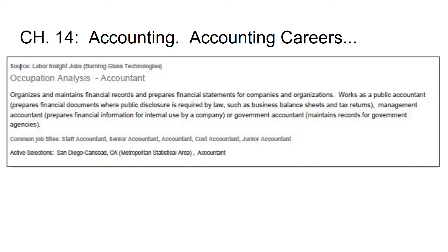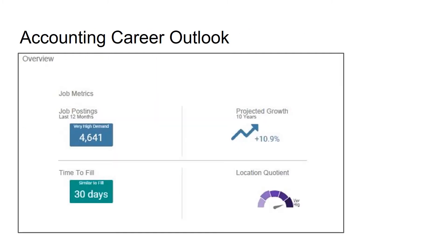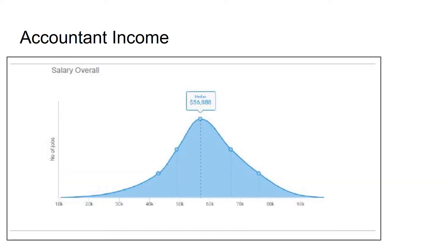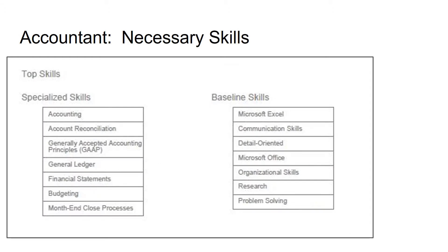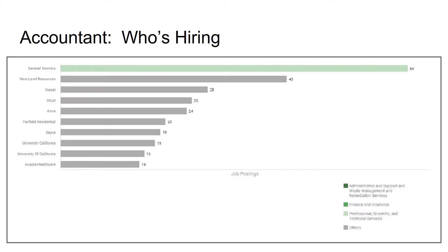The next series of slides, slides four through eight, I'm not going to lecture on, but I like to provide information on each of the topics from a career standpoint. For example, what does an accountant do and how much do they get paid? I've embedded work-based learning in a few slides on each chapter. You can look at these slides on your own — they cover what accountants do, projected growth for accounting as a career, how much they make (local data for San Diego County from the career center's databases such as Burning Glass), the skills required, and who's hiring locally.